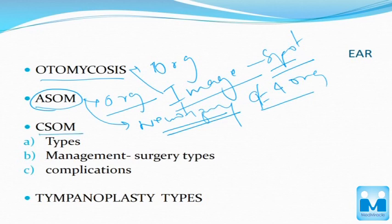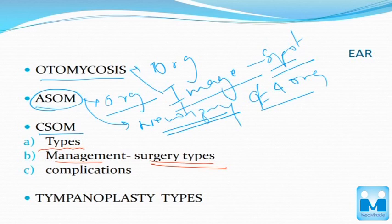In CSOM, you have to know the types and the management. In the management part, it's mainly the surgery types — whether it's radical mastoidectomy, modified radical mastoidectomy, canal wall up, or canal wall down. You have to know the various types of surgeries available. The other part of CSOM you must know is the complication — various extracranial and intracranial complications that can arise.